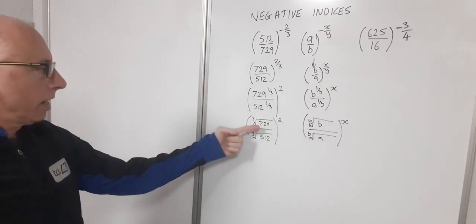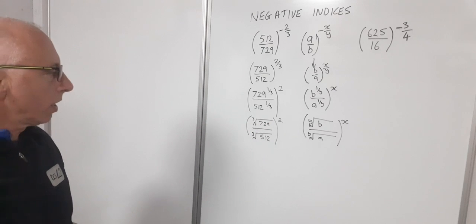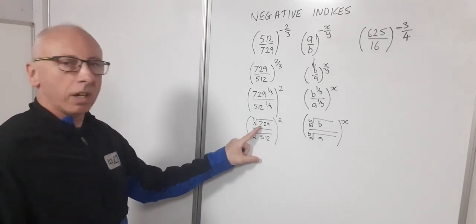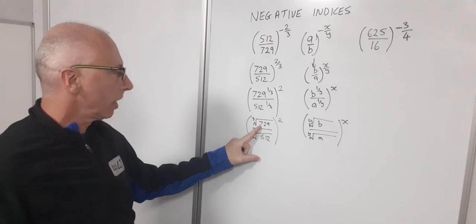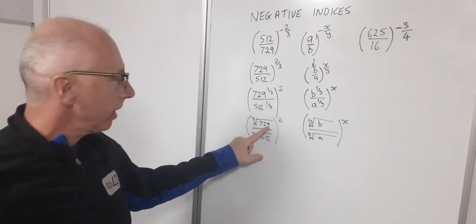Okay now what's the cube root of 729? Well I know nine nines are 81, 81 times 9 is 729. So the result inside there is 9.